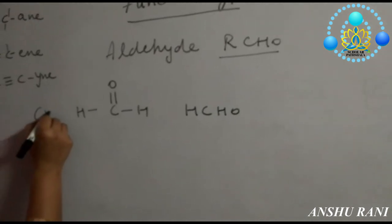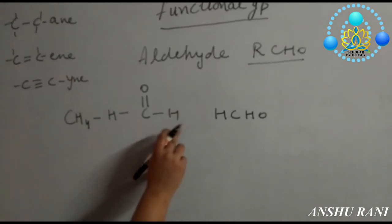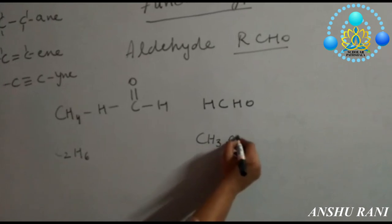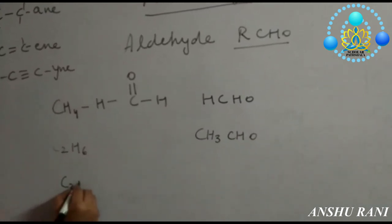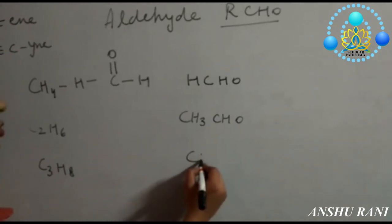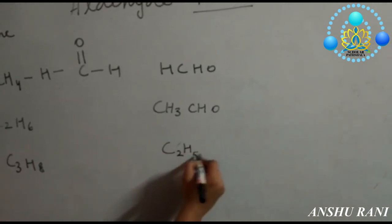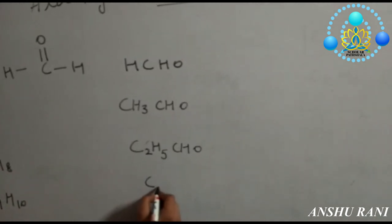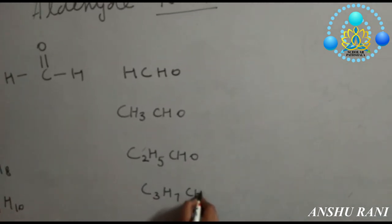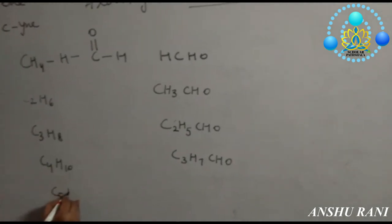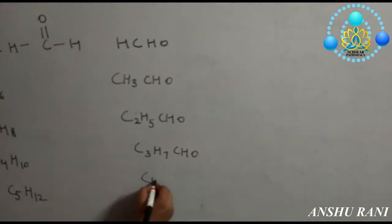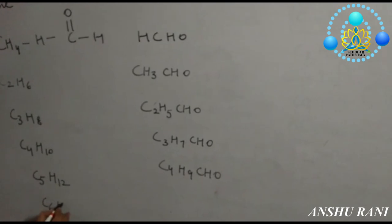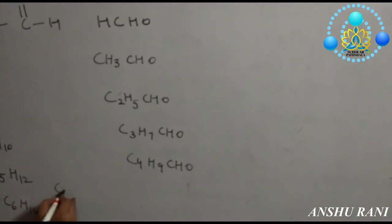So it will become HCHO. Methane can turn to HCHO. When you will take C2H6, you will get CH3CHO. When you will take C3H8, it will turn to C2H5CHO. If you will take C4H10, it will give you C3H7CHO. If you will take C5H12, you will get C4H9CHO. Then we will take C6H14.